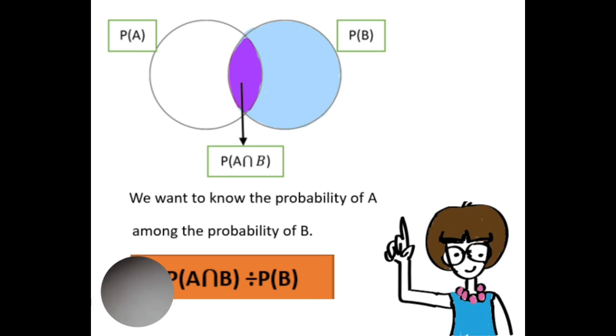In this case, we're only dividing by the probability of B because that's the given condition. And with that given condition, we just want to know the probability of A in that.